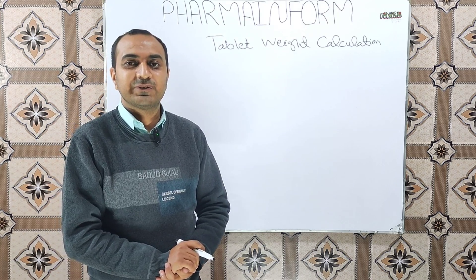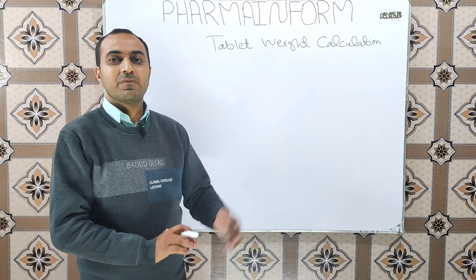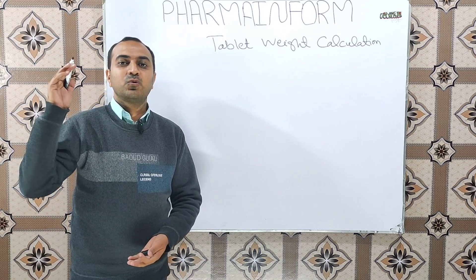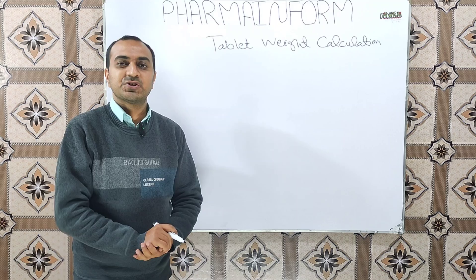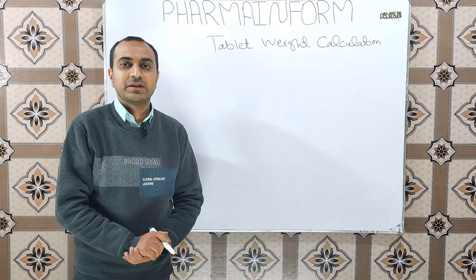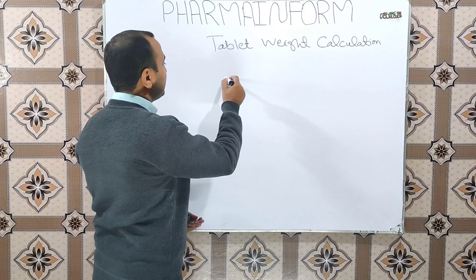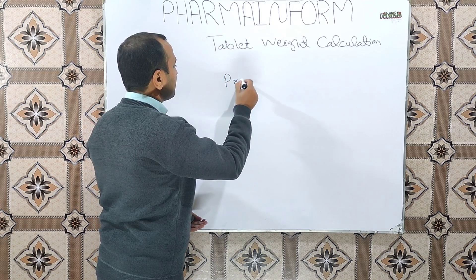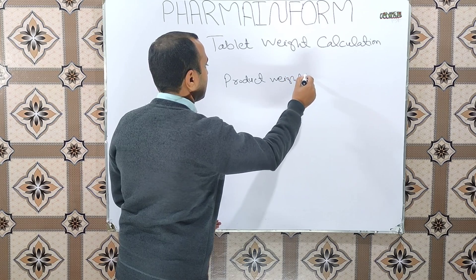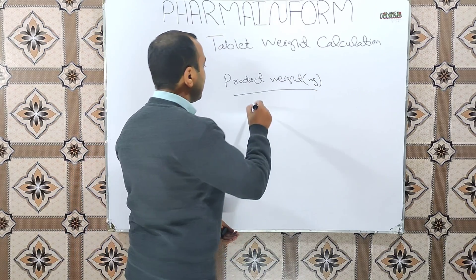After watching this video you will be able to solve this basic calculation. If you have not subscribed to my channel, first press the subscribe button and visit the playlist 'Calculations' to learn more basic calculations of the pharma industry. Now let's start. To calculate the tablet compression weight, the formula is: product weight in milligrams divided by the number of tablets.